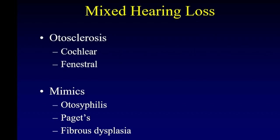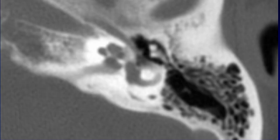The first thing we want to talk about is otosclerosis. Otosclerosis is the most famous thing that causes a mixed hearing loss. It has a cochlear and a fenestral form, and I'll show you examples of both of those. But there are several mimics of otosclerosis that we need to keep in mind: otosyphilis, which has become so rare it is almost never seen, and Paget's disease and fibrous dysplasia, which we can distinguish radiologically.